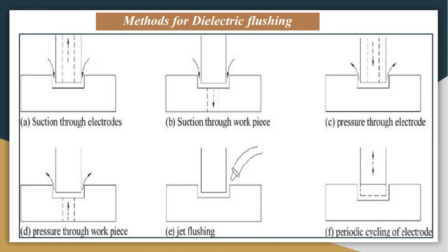In the fourth option, the dielectric flows through the workpiece face into the inter-electrode gap. In the fifth option, jet flushing is used — through a nozzle, the dielectric is delivered into the inter-electrode gap. Alternatively, you can achieve dielectric flow by periodic cycling of the electrode.